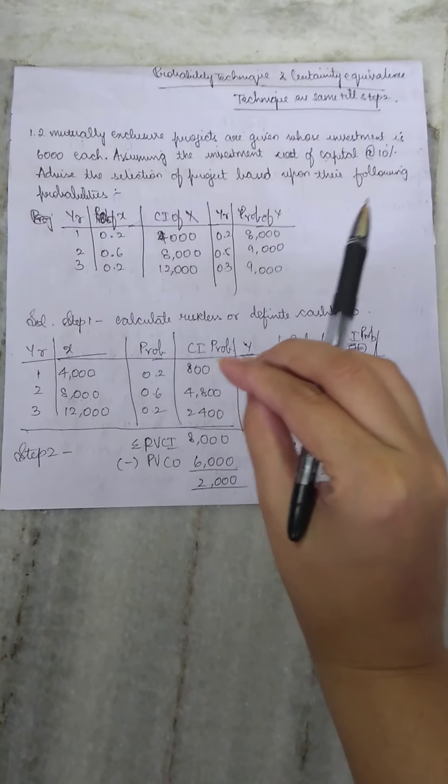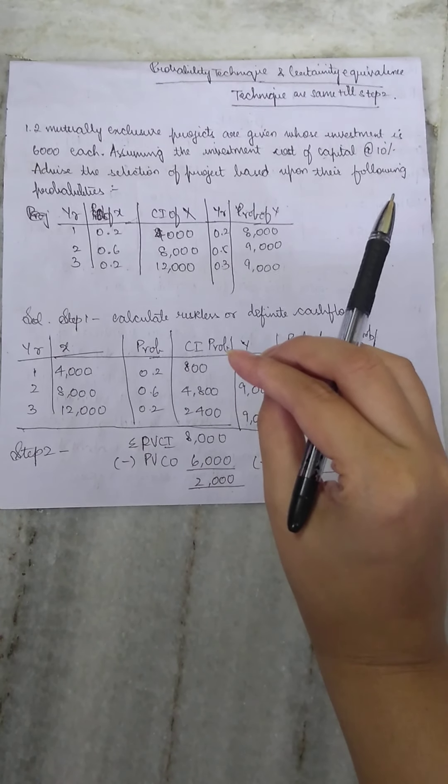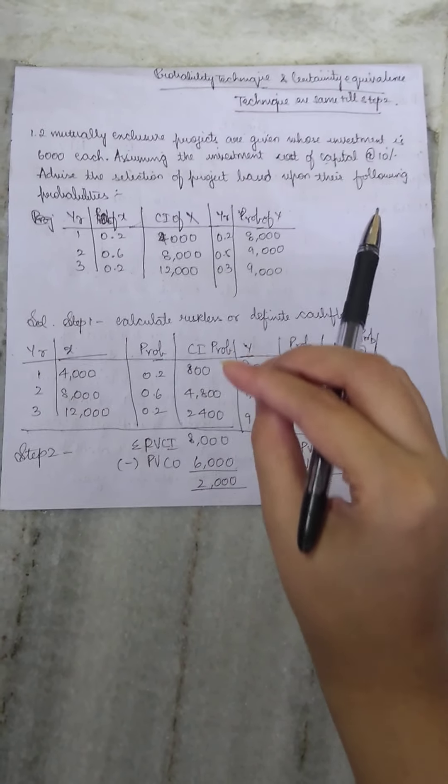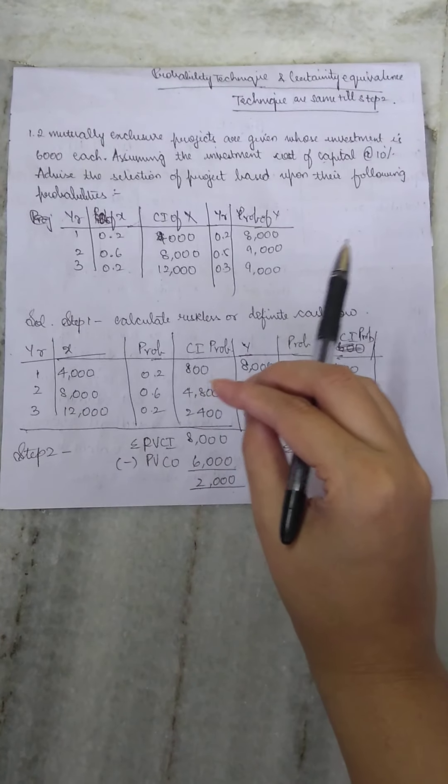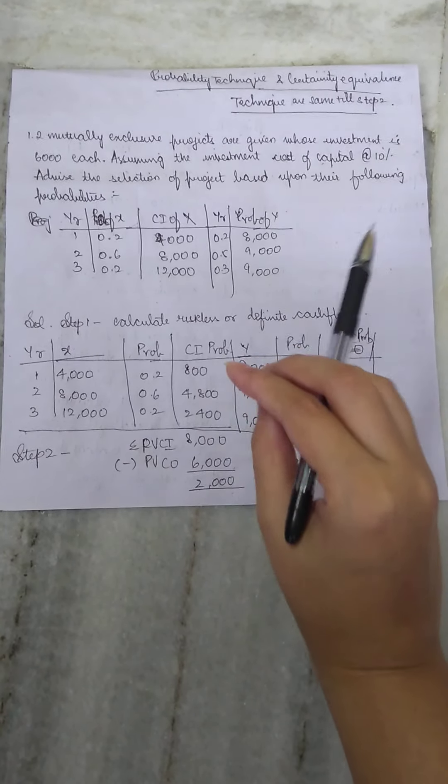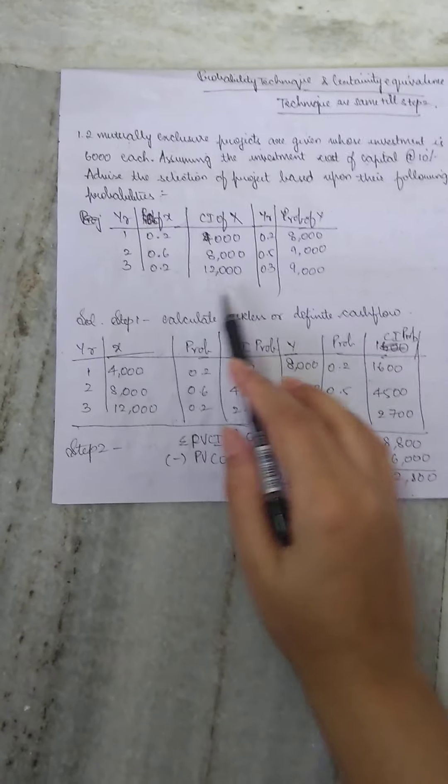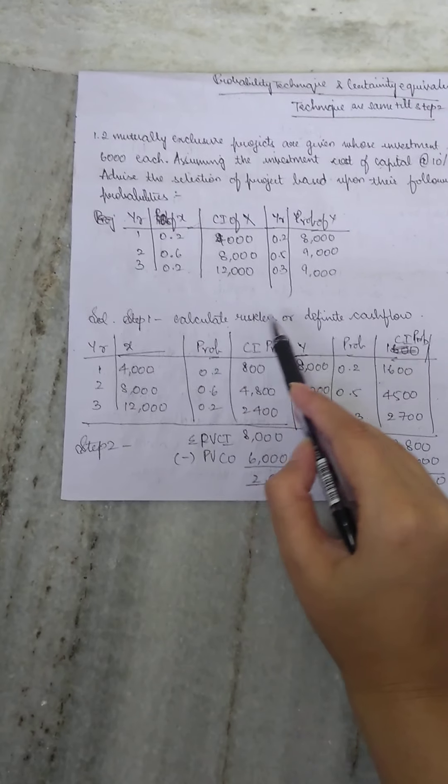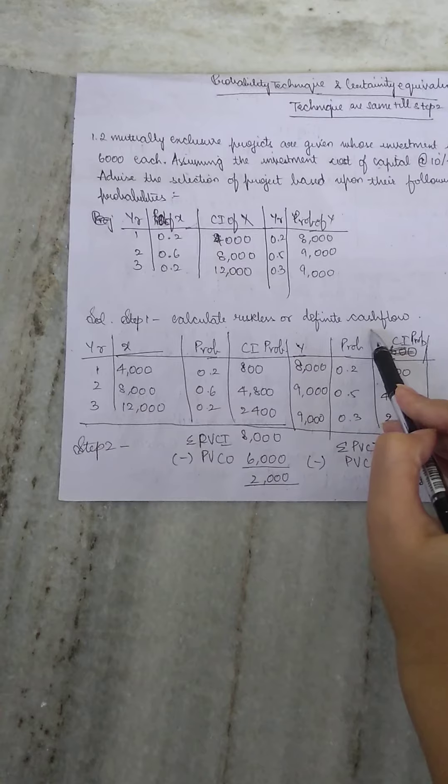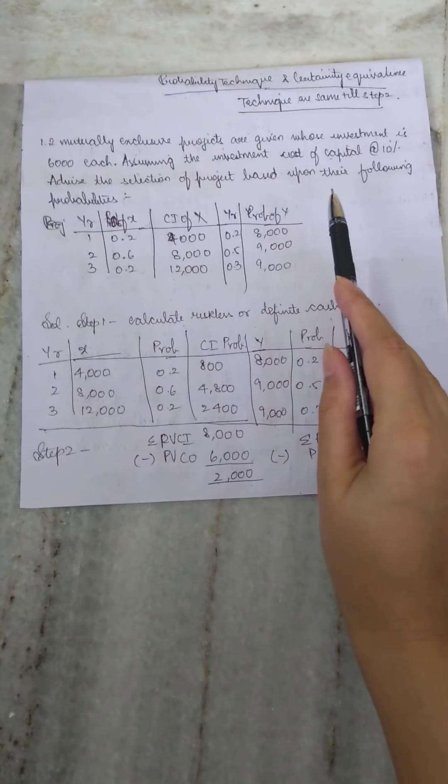They are asking you for probability that definitely, as promised by the people who have taken your investment, how much returns you will be getting definitely. For that we are calculating this. So let us start step one: calculation of riskless or definite cash flows as we have done in certainty equivalence technique.